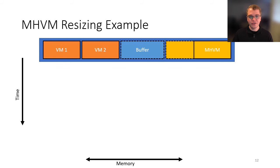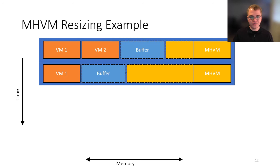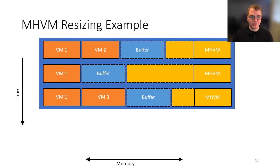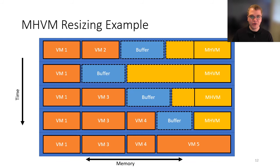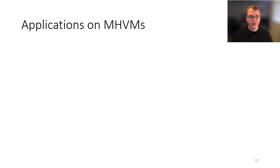To illustrate how memory resizing works on a host in detail: we have a host with plenty of memory, a few guests, our memory buffer, and an MHVM harvesting some resources. If one of those guests leaves, the MHVM grows into the newly freed memory. If a guest arrives, it fits within the buffer, and the buffer is refilled by shrinking the MHVM. If the data plane decides to land additional VMs, we may eventually need to evict our MHVM, so we need to be prepared for that.